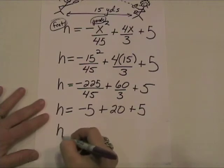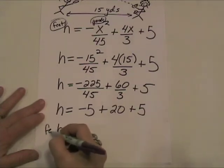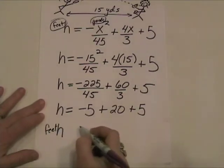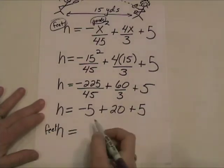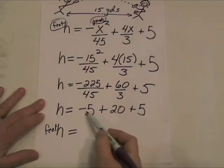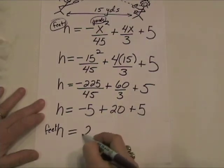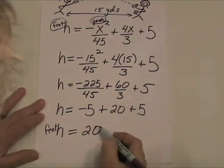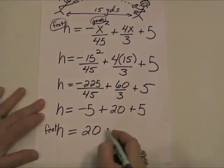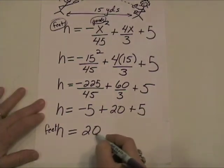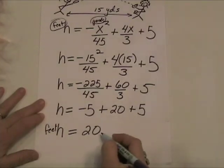The height of the ball in feet is going to be equal to — look — negative 5 plus positive 5 is 0. So negative 5 plus 20 plus 5 equals 20. Katie's going to have to jump up 20 feet to get that ball, and Katie's kind of a small girl — I don't think she's going to catch this one.